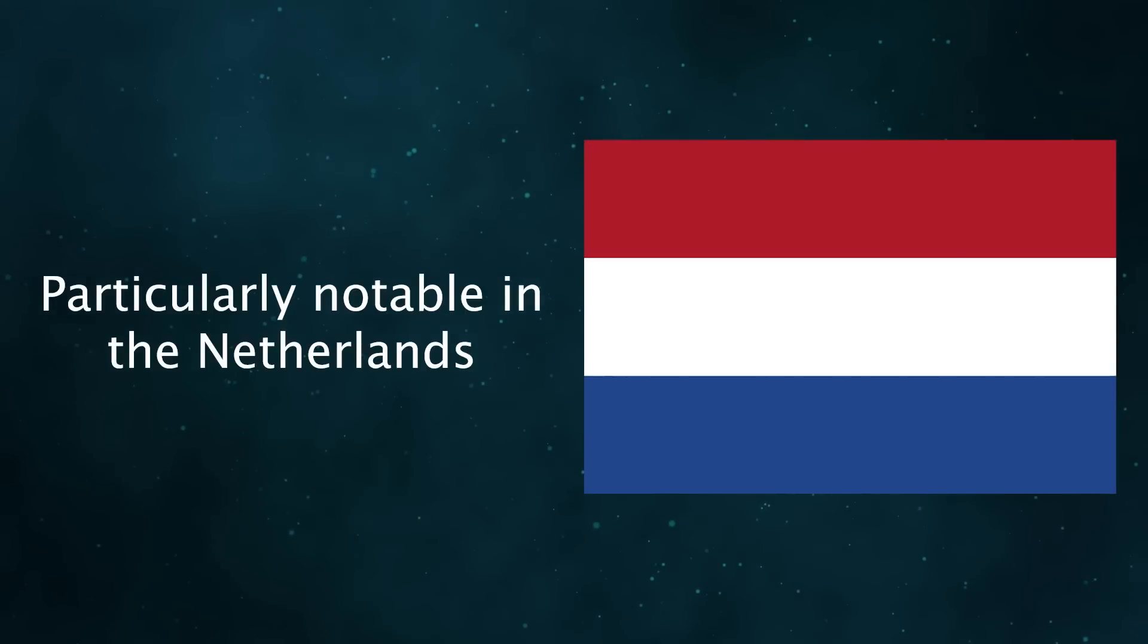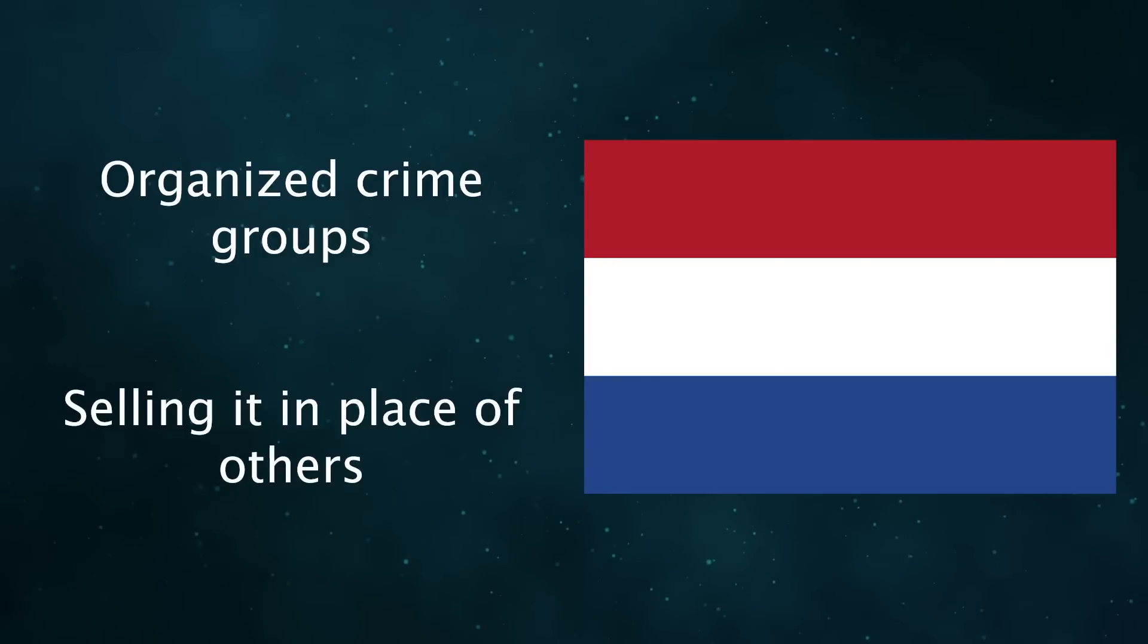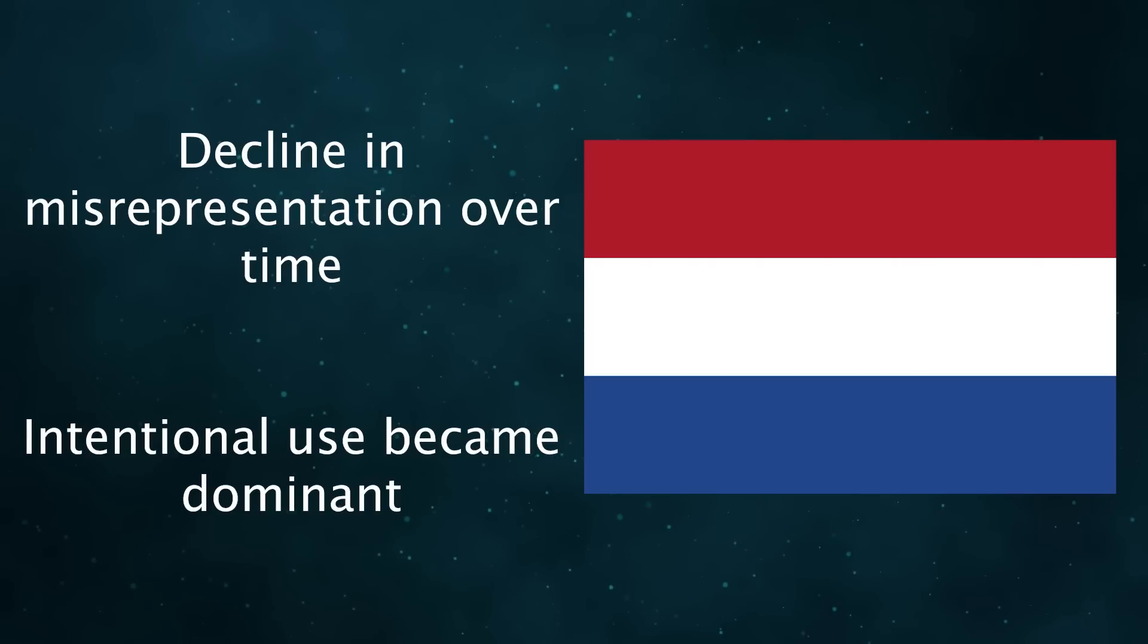The Netherlands has had a particularly notable presence of 4-FA. Initially, it appeared to come from organized crime groups that were selling it in place of other drugs, including amphetamine and MDMA. Between 2007 and 2013, there was eventually a decline in misrepresentation. Because the drug is pleasurable on its own, 4-FA has been intentionally used by many people. At least by 2013, intentional purchases were more common than misrepresentation in the Netherlands.